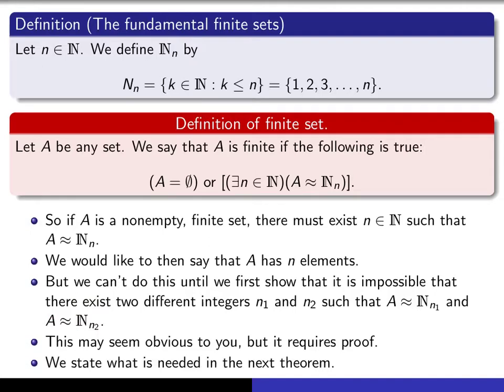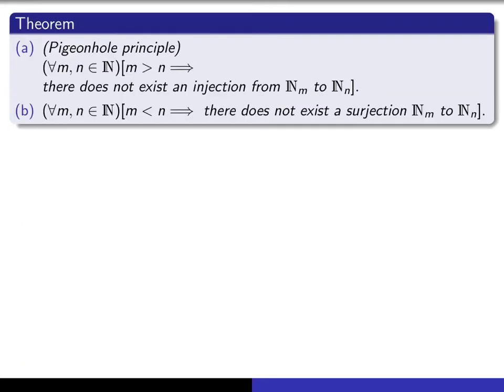But let me state the theorem that would be needed in order to actually say that there can't exist two different such integers n1 and n2. It's actually quite a famous result known as the pigeonhole principle. So the pigeonhole principle says that given any pair of natural numbers m and n, if m is bigger than n, then it's impossible for there to be an injection from N sub m to N sub n. N sub m is just too big.